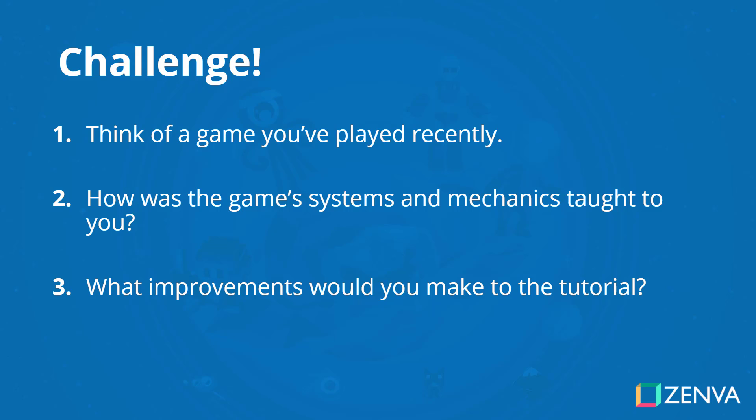There are obviously mechanics and systems in games that you learned — how did you learn those? And what improvements would you make to the tutorial? Would you remove the text and somehow integrate a more Half-Life 2 style of teaching, with a three-step process: teaching in a safe environment, then in a normal environment, and then teaching how to combine different systems together?